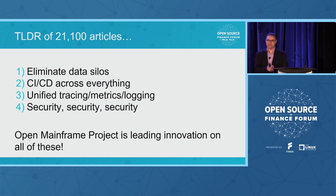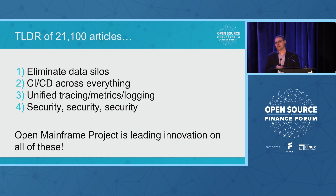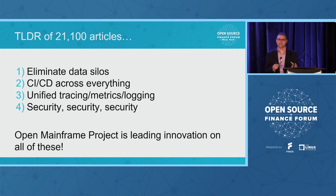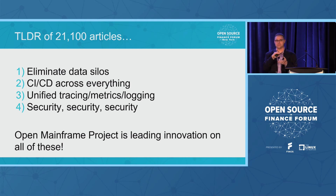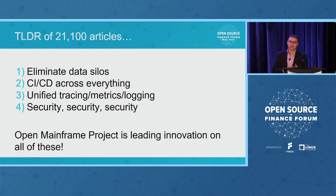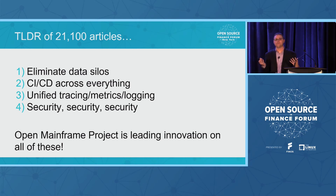Number one is the challenge with data silos. If you're running mainframes, that's probably one thing that has just naturally emerged over time, but it also happens in other areas — SaaS applications don't always integrate well into other areas, homegrown applications, different cloud things — data silos just emerge, especially if applications are built in lines of business. Second is the need for continuous integration and deployment across your entire application stack — not just specific to one area or one application, but how you're doing your entire deploys. Third is being able to manage and unify all of the back-end tracing, metrics, and logging. Many systems have different ways of doing it, but for an enterprise you want that single view of how it all comes together.